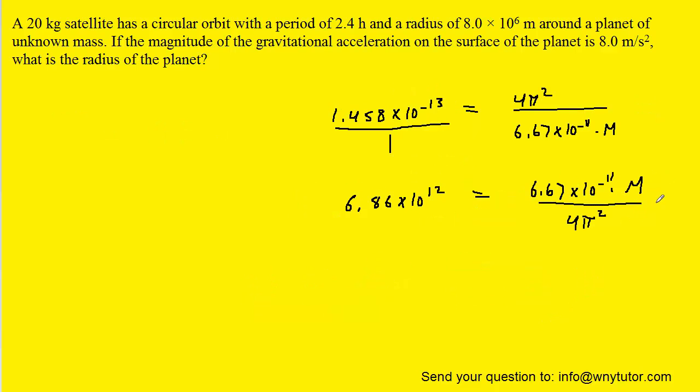We could then multiply both sides by 4 pi squared and then divide by 6.67 times 10 to the minus 11. And we would get 4.06 times 10 to the 24th kilograms for the mass of the planet. And it turns out we can use the mass of the planet to find its radius.